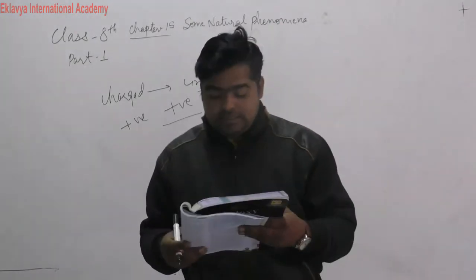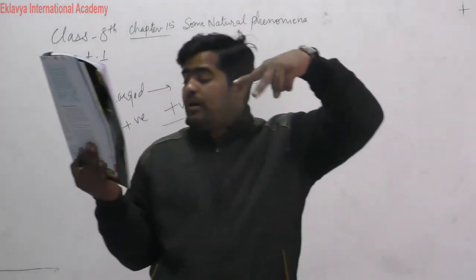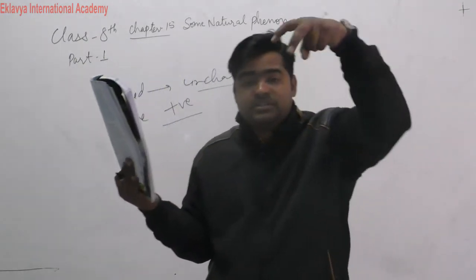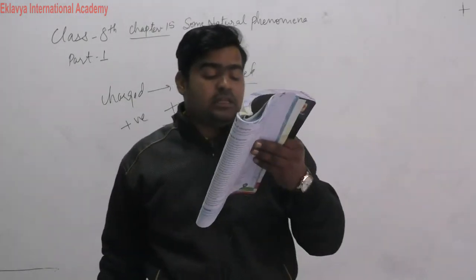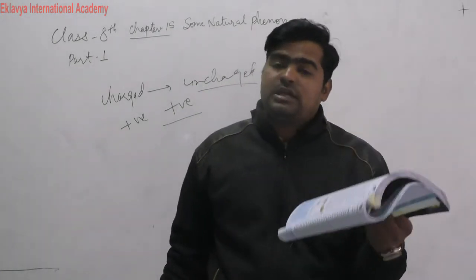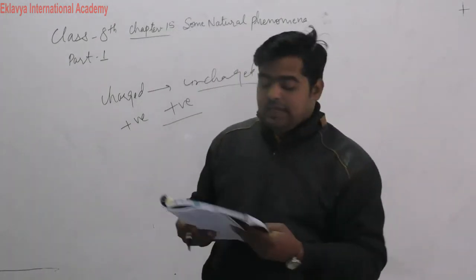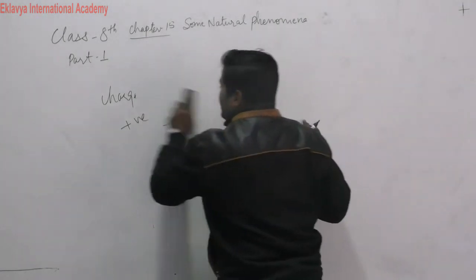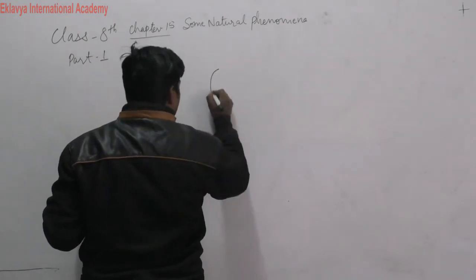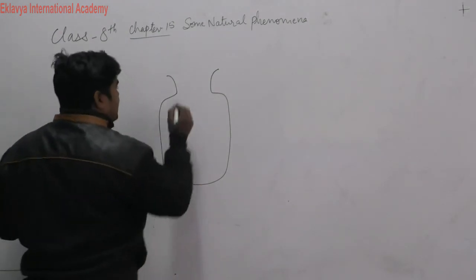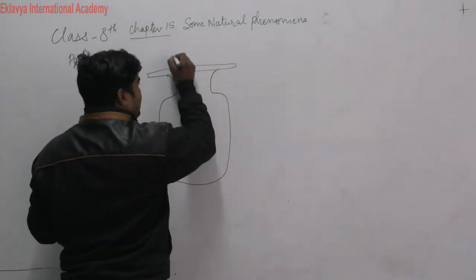An electroscope is an object — it has a glass jar, inside which two aluminum strips are hung. These aluminum strips are connected through a copper wire to the outside. To make an electroscope, a cardboard or glass jar is used, a copper wire passes through it, and aluminum strips are attached inside.